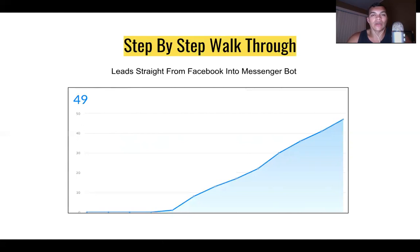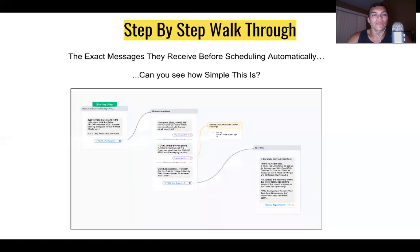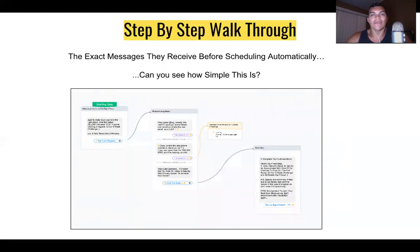Here's the step-by-step walkthrough. As soon as they click the Facebook ad link it takes them here — these are the exact messages they receive before scheduling automatically. See how simple this is? It's only three messages. Facebook automatically pulls their name from their profile, so we don't have to ask for it. That's one hard thing already eliminated.